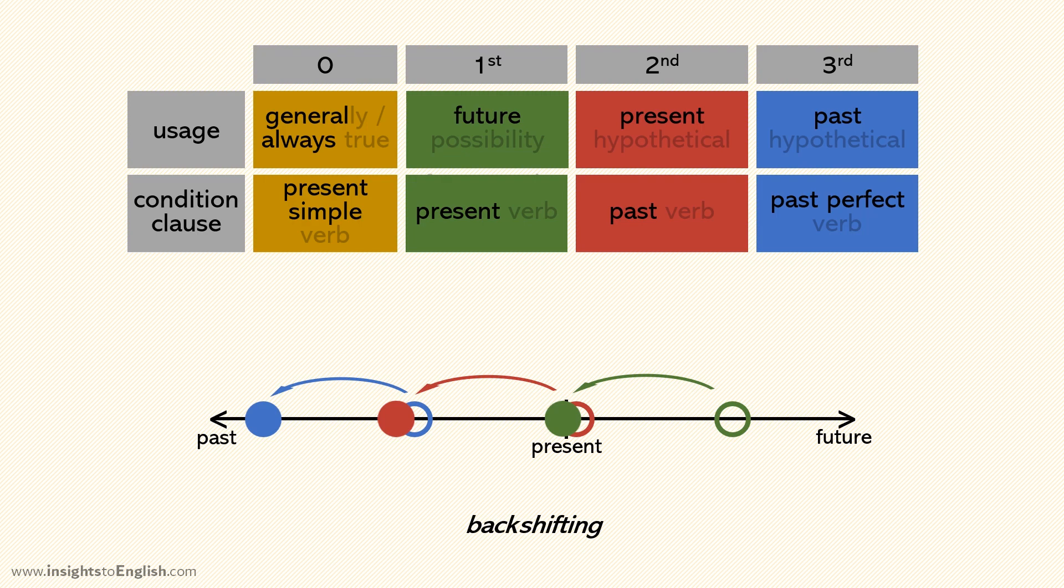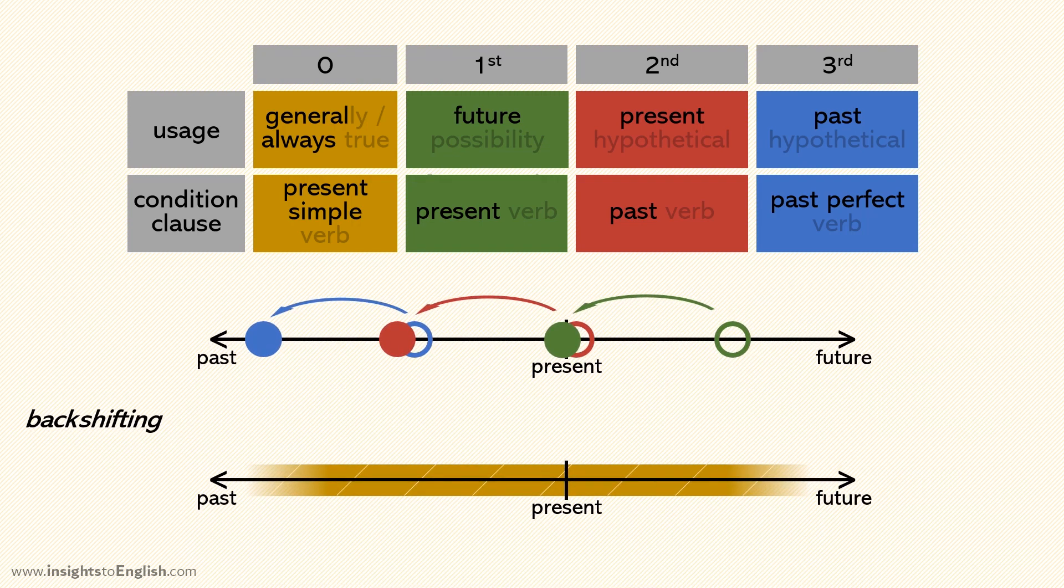But what about the zero conditional? Remember that one way to use the present simple tense is to talk about things that are always or generally true. For example, Donna has green eyes. That doesn't change with time. So if we take always and make it more past, what is it now? It's still always. It doesn't change. So we still use the present simple.